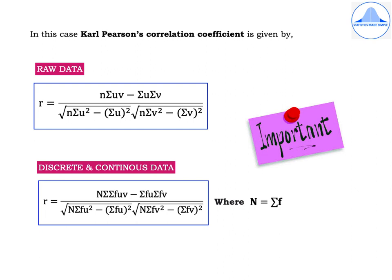Similarly, for discrete and continuous data, in the original formula of Carl Pearson's correlation coefficient, replace x and y by u and v. The formula becomes: r equals N times double summation fuv minus summation fu times summation fv, divided by the square root of [N times summation fu-squared minus (summation fu) squared] times [N times summation fv-squared minus (summation fv) squared], where capital N equals summation f, the sum of the frequencies.